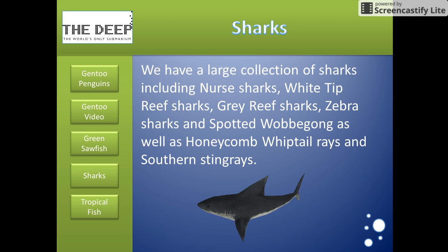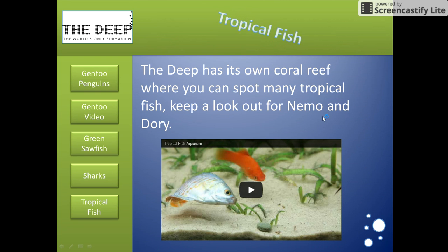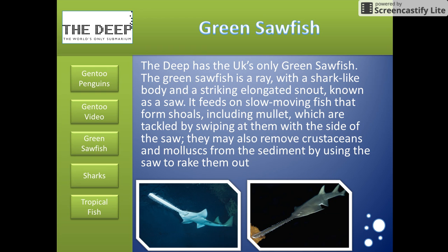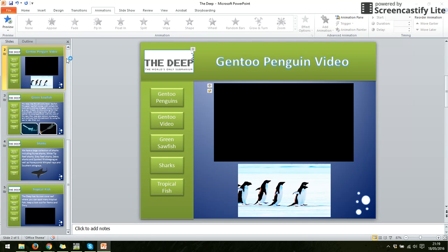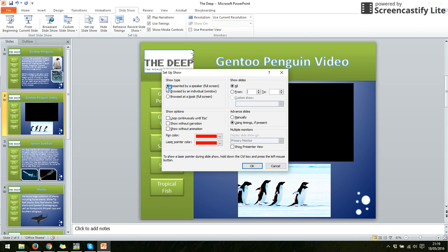I'm going to show you something really quite important when you're doing one of these touchscreen presentations for a museum, aquarium, zoo, or anything like that. What you don't actually want is if you click somewhere — for instance, if I click here — it moves to the next slide. They don't want you to do that; they want you to only use the buttons so that you don't just click through the slides. So I'm going to show you how to set it so it only uses the buttons. If I go up to Slideshow and then Setup Slideshow, it gives me a choice: present by a speaker, in a window, or browse at a kiosk — so I'm going to change it to browsed at a kiosk.